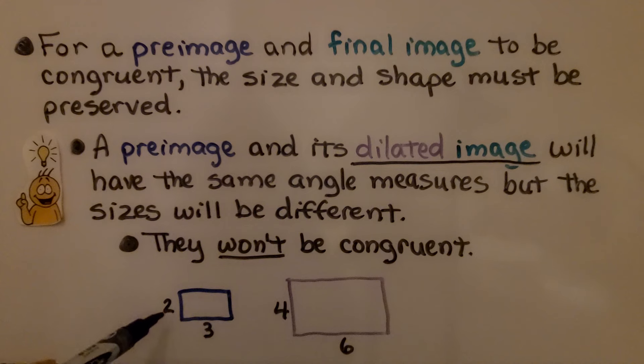This one has a side of 2. If we had a dilation with k-factor 2, we would multiply this and get 4. And if this side were 3, we'd multiply it by that k-factor 2 and get a 6. They're not congruent. They may have the same angle measures, but they're not the same size.